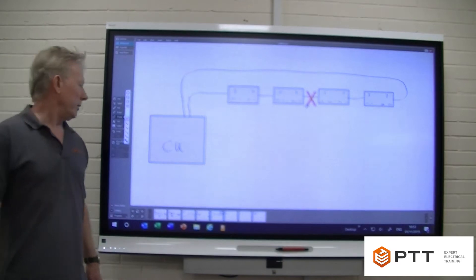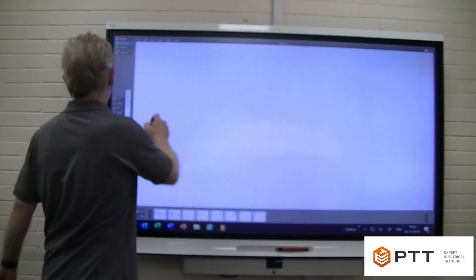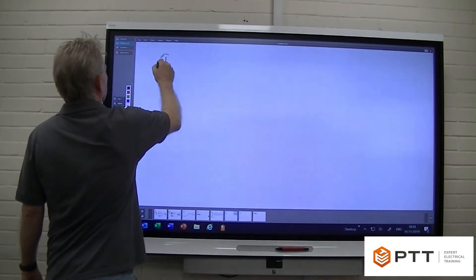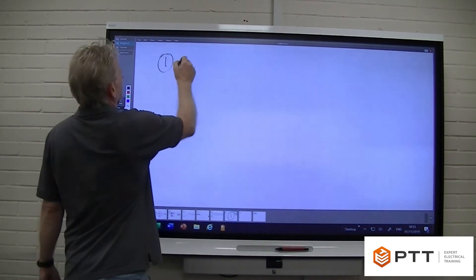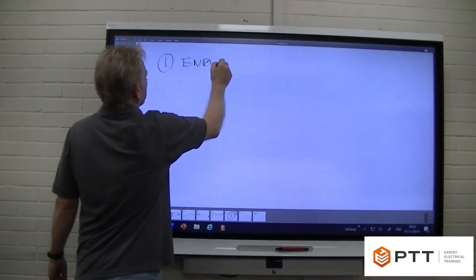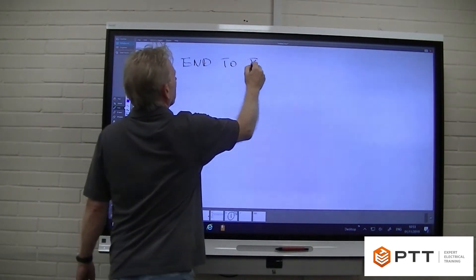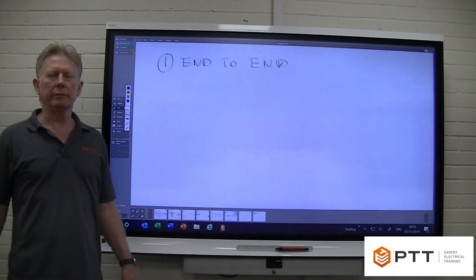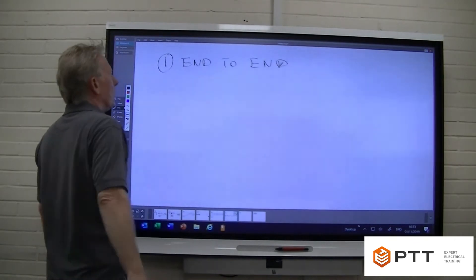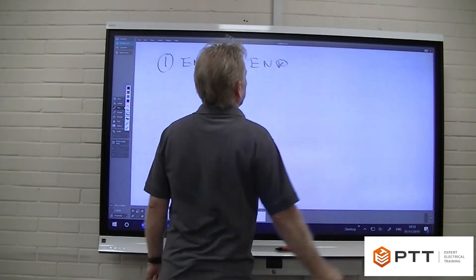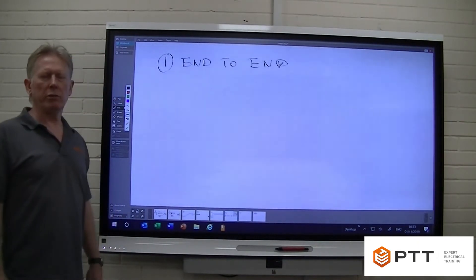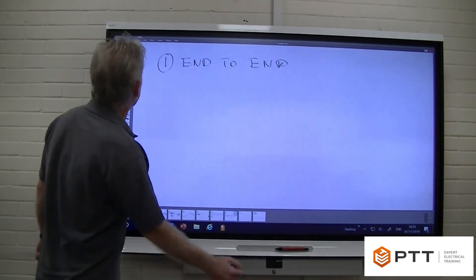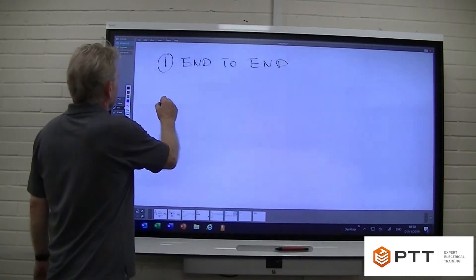With the ring, basically there are three tests. Test number one is actually what we call end-to-end resistance. The whole point of that test is we actually want to prove it is actually a ring. Once we've got the results from this and once it passes that test, it allows us to do some calculations. We're going to be making some cross connections later to actually check that the ring is working satisfactorily.